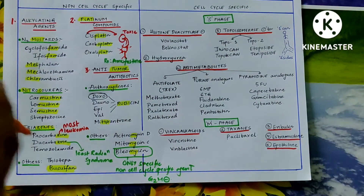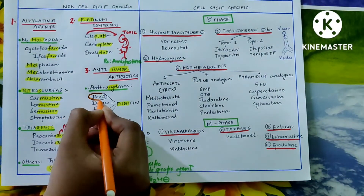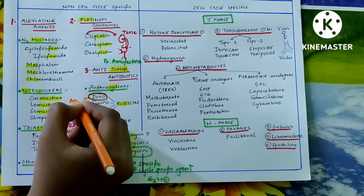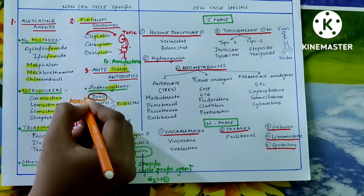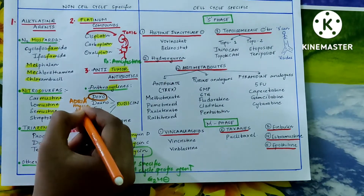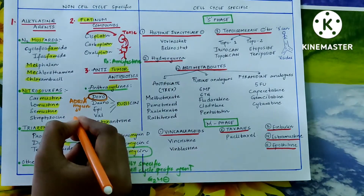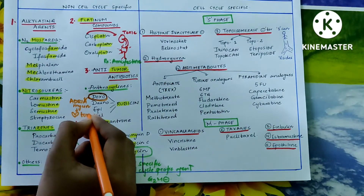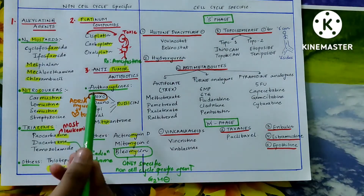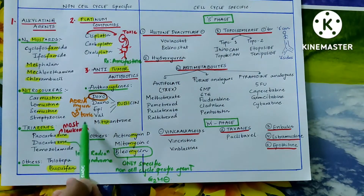Doxorubicin is otherwise called adriamycin, and adriamycin is cardiotoxic. Now let us move towards cell cycle specific drugs.